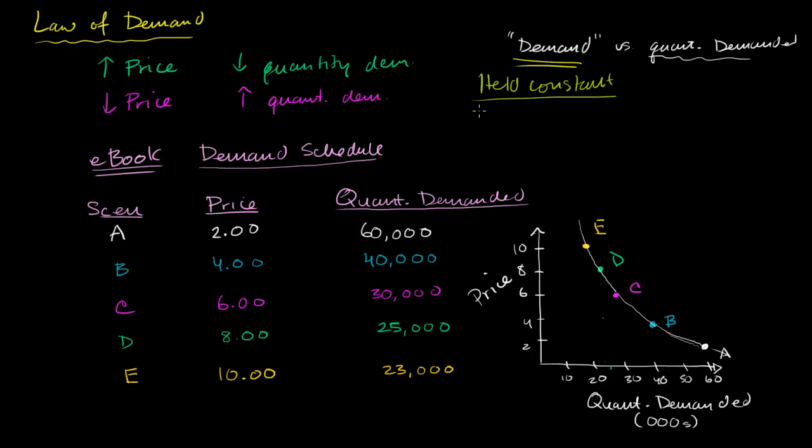is price of related goods. The other thing we assumed that's being held constant is price expectations for our good - price expectations.